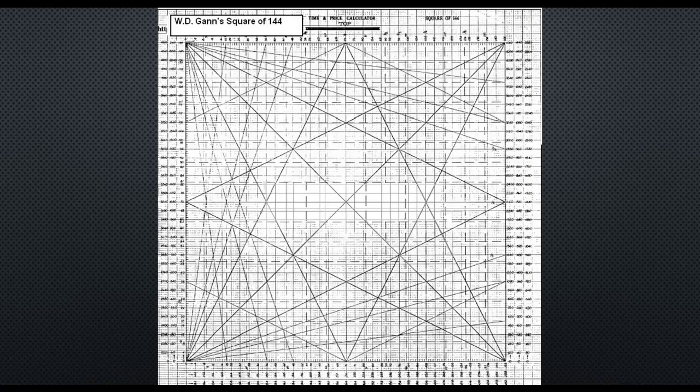Now what you're left with here is these counts, and this is important because Gann didn't have charting software on a computer and stuff like that. These are kind of calculators.